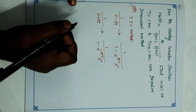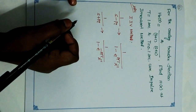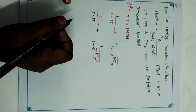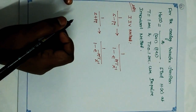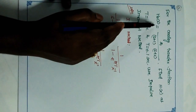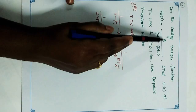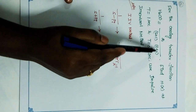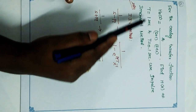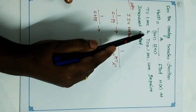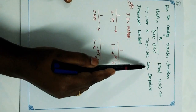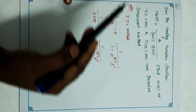Hello friends, today we are going to discuss the impulse invariant method. The given problem is: the analog transfer function H_a(s) is equal to 2 divided by (s+1)(s+2). Find H(z) at T=1 second and T=0.1 second using the impulse invariant method.